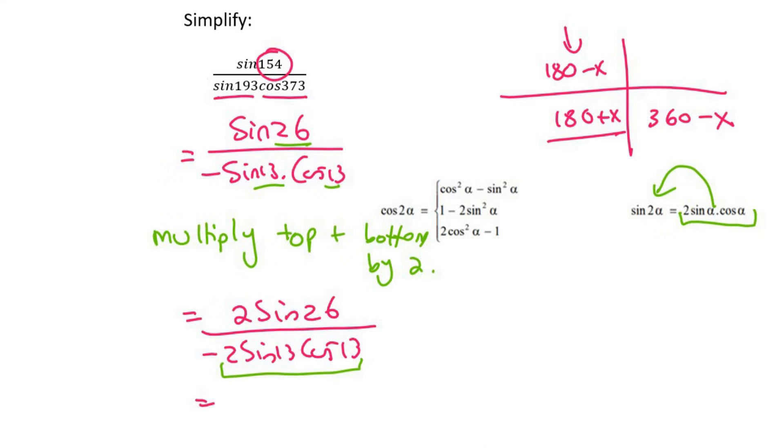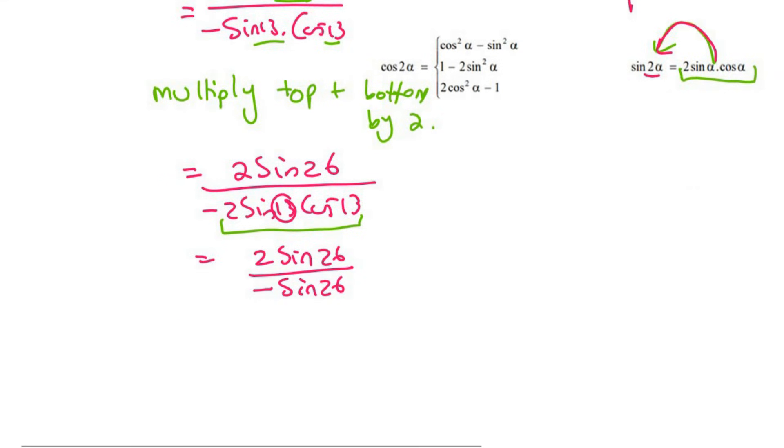And so what we would end up with is 2 sin 26 over negative sin 26. Because 13, if you write it like that, it's going to turn into 26. And so then what happens is that the sin 26s cancel out. And then you're left with a 2 over negative 1. But that is just negative 2.